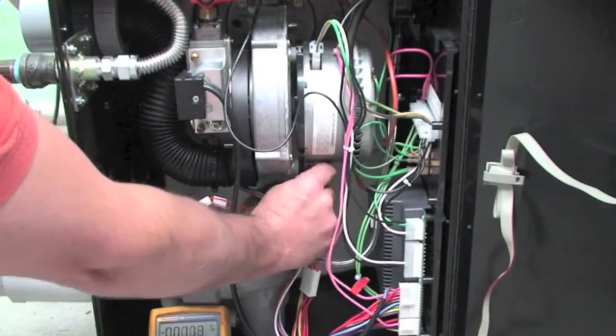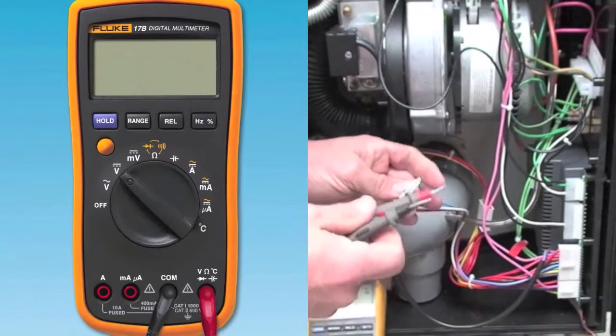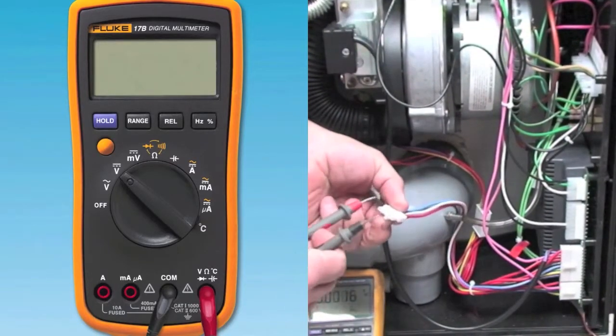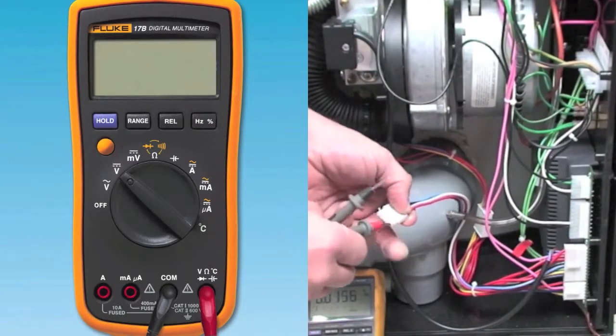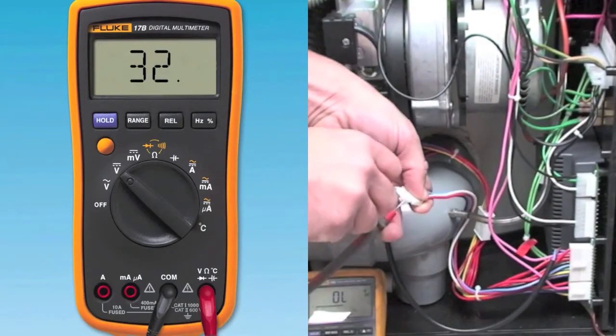Set your meter to measure DC voltage and place the red lead from your meter into the red wire from the Molex connector of the fan and the black lead into the blue wire into the Molex connector from the fan. You should measure between 24 and 40 volts DC.